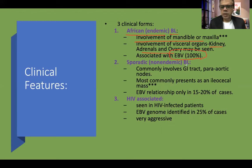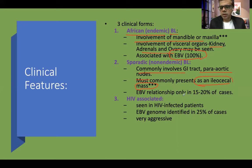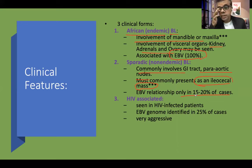Sporadic or non-endemic Burkitt lymphoma is quite common in the United States, involving the GI tract and parotid nodes, and most commonly presents as an ileocecal mass. This is an important differential in the pediatric age group. Epstein-Barr virus relationship is seen in only 15 to 20% of cases — unlike African Burkitt lymphoma, EBV is present in only about one-fifth of cases.